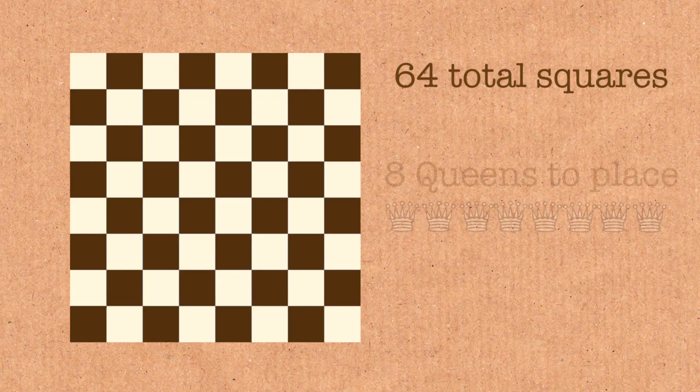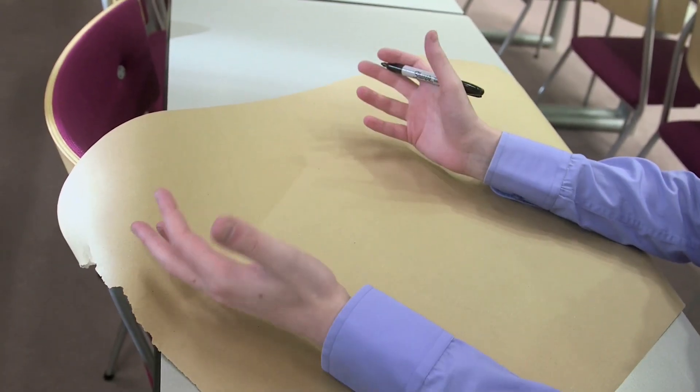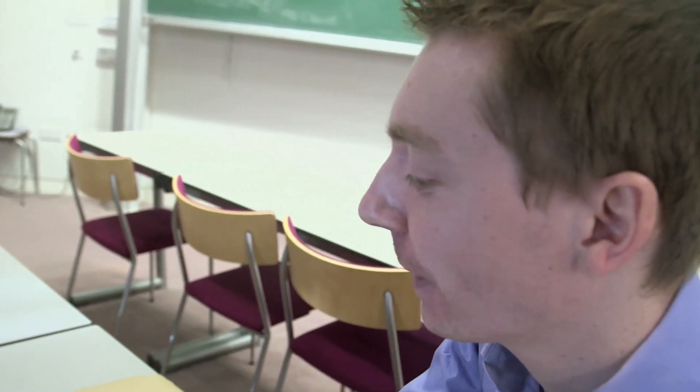Which does mean that we've got 56 blanks. I think we can do this calculation. I think even Brady can do this calculation. How many ways can you arrange 64 objects, Brady? 64 factorial? Yeah, 64 factorial.